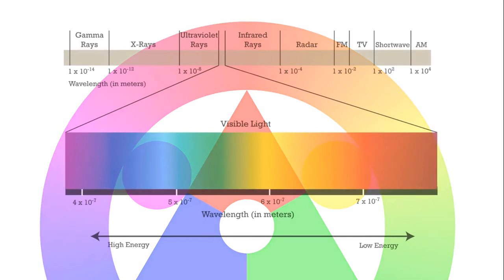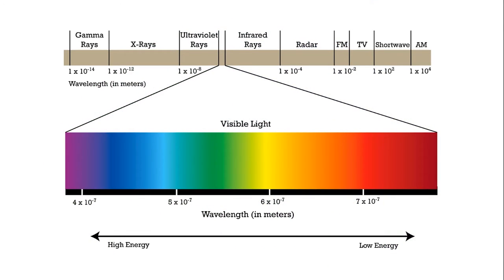Red sits right before the invisible light infrared, which I'm sure you've heard of. As light wavelengths get longer and extend outside of our ability to perceive them, they're considered infrared. Infrared light is responsible for radiating heat, so some of red's psychological associations are related to the fact that it sits so close to this hot zone within the color spectrum.